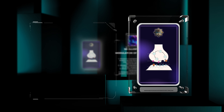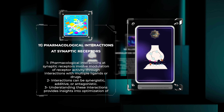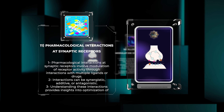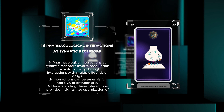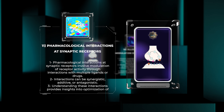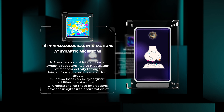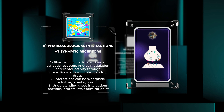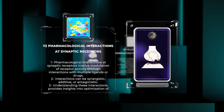Pharmacological interactions at synaptic receptors involve the modulation of receptor activity through interactions with multiple ligands or drugs. These interactions can be synergistic, additive, or antagonistic, depending on the individual pharmacological properties of the substances involved. Understanding these interactions provides insights into the optimization of pharmacological therapies and the avoidance of unwanted side effects.